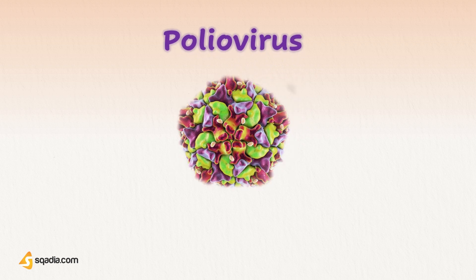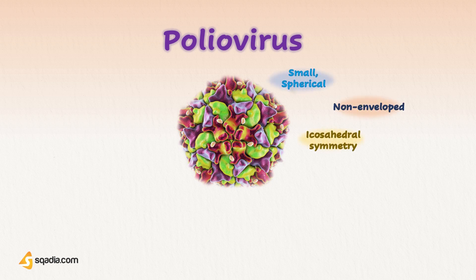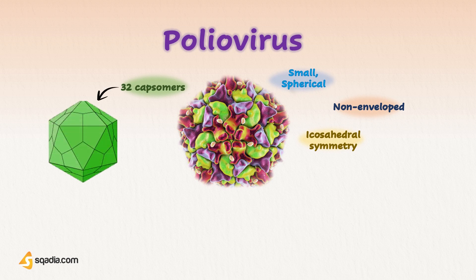Starting with Polioviruses. Polioviruses are small, spherical, naked or non-enveloped viruses with icosahedral symmetry. The capsid of poliovirus is composed of 32 capsomeres — subunits forming an outer protein covering for protection of genetic material. There are three antigenic types of poliovirus: 1, 2, and 3, where type 1 is more associated with paralytic cases.